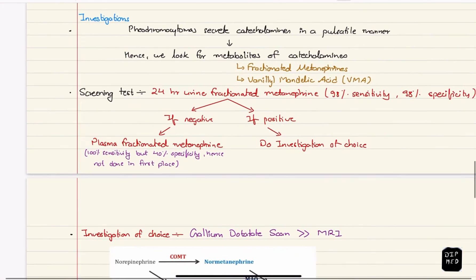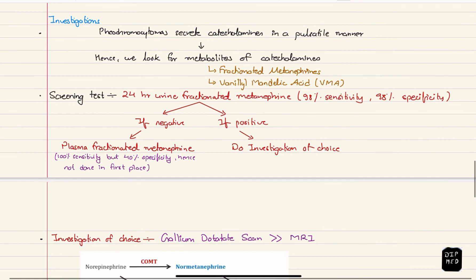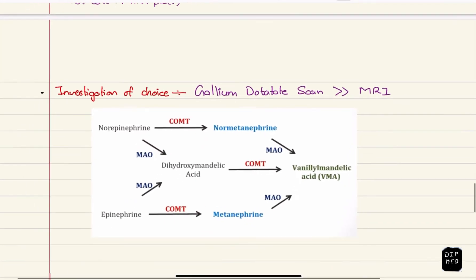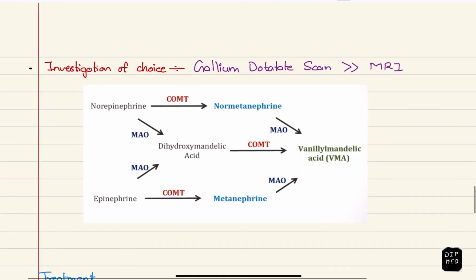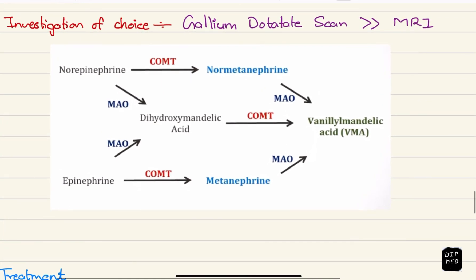If the test is positive, investigation of choice is done. As investigation of choice, gallium dotatate scan is preferred over MRI or CT scan. This picture shows the metabolism of catecholamines by enzymes MAO or COMT.